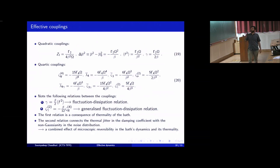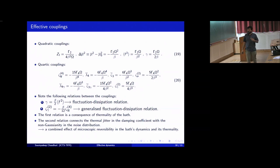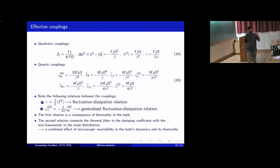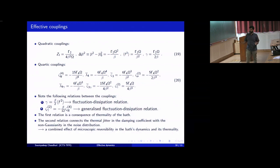For our model, the values of the effective couplings in the high temperature limit that we are working in are given here. I want to emphasize two relations between these effective couplings. One is the usual fluctuation-dissipation relation, which relates the damping coefficient with the strength of the additive noise — this is also present in a quadratic theory, and follows as a consequence of the thermality of the bath.